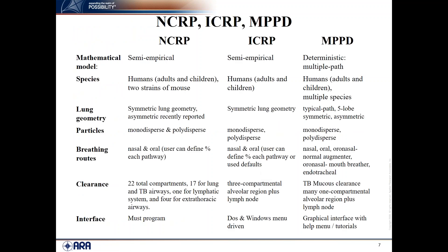MPPD is not unique — there is other software similar to it. I wanted to compare MPPD versus the two major ones that precede it: NCRP and ICRP. NCRP and ICRP are semi-empirical — basically data fit to some function. But MPPD is mechanistic, meaning it has physics, physiology, and biology incorporated. In that sense, it is a step forward.